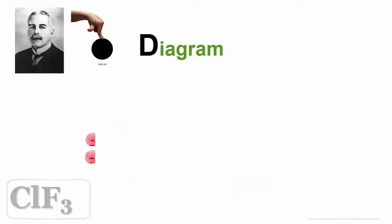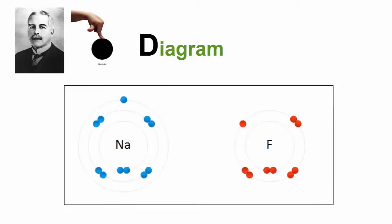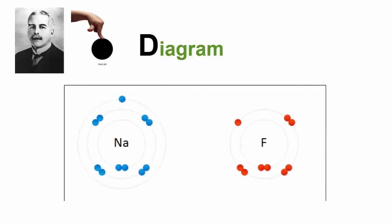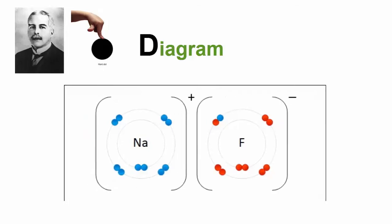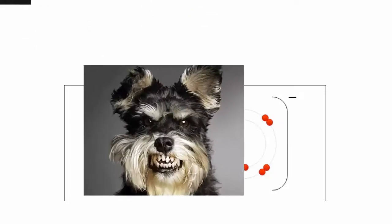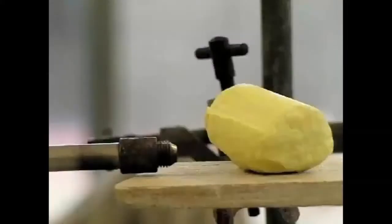Similarly, we can start over and form an ionic bond, which involves a metal and a nonmetal. To demonstrate, we'll take sodium and fluoride and bond them together. Sodium will give away its electron because it's a metal forming an ionic bond. And we all know, of course, metals are all dogs.